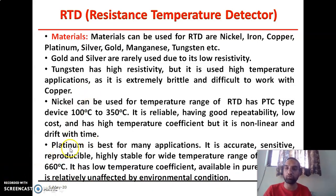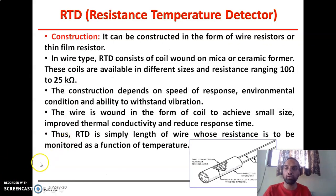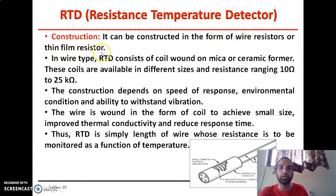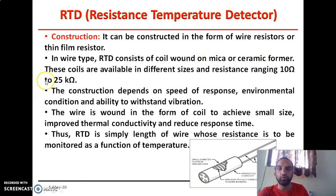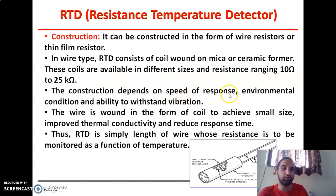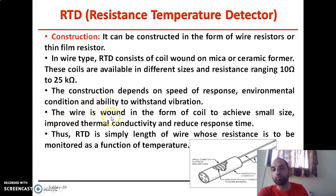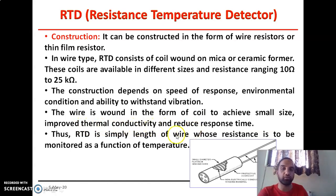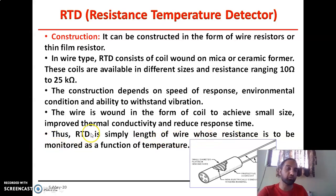RTD can be constructed in the form of a wire resistor type or thin film resistor type. In the wire type, the RTD consists of a coil wound on a mica sheet or ceramic form. The coil is available in different sizes with resistance values ranging from 10 ohms to 25 kilohms. The construction depends upon the speed of response, environmental conditions, and the ability to withstand vibration. The wire is wound in the form of a coil to achieve small size, improve conductivity, and reduce response time.